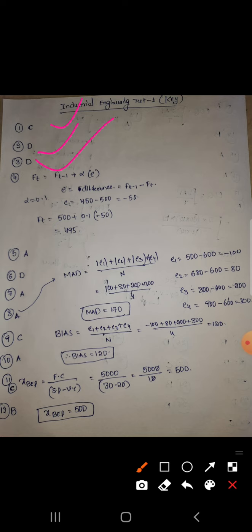Fourth question, they are asking for the February month, what is the expected forecasting? That problem will solve like this: F(t) = F(t-1) + α*e. Here e is the difference between the previous one minus the recent one, so 450 minus 500, that is minus 50. If you substitute in that formula, alpha is given as 0.1, you get 491. So D is the correct answer.